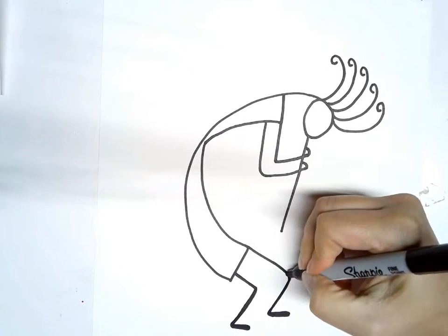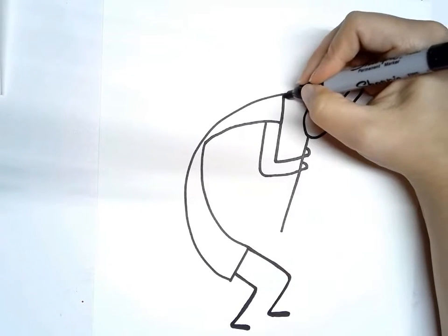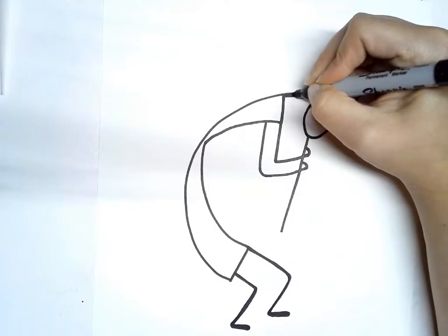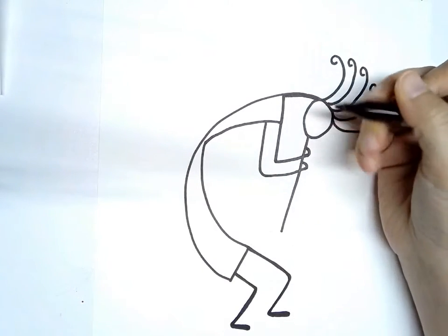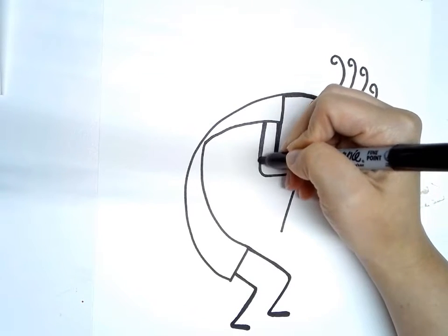And then again just thicken up some of these lines so they're not quite so thin. Thicken the neck and the arms a little bit so they're thicker towards the top.